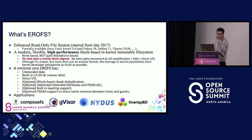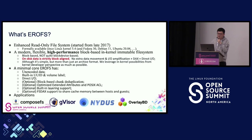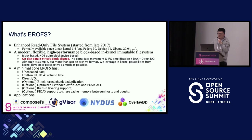Although it is simple, it is more than just an archive format. We leverage many in-kernel possibilities from the kernel developer perspective as much as possible. A minimal core EROFS has the following features such as unencoded data, built-in UUID and volume label, direct I/O, chunk deduplication, extended attributes, ACL, and built-in layering support. So we can have minimal metadata and many data blobs, and we have FSCache support to share cache memory between host and guest.